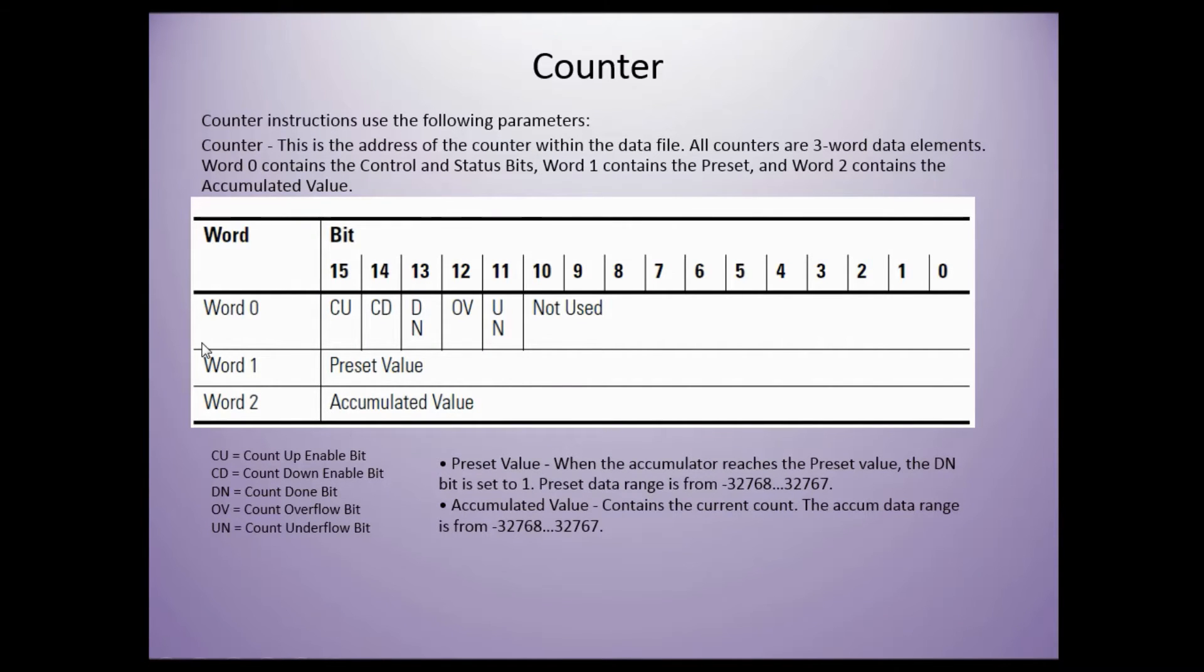Counter instructions use the following parameters. The counter is the address of the counter within the data file. All counters are three word data elements. Word zero contains the control and status bits. Word one contains the preset and word two contains the accumulated value.